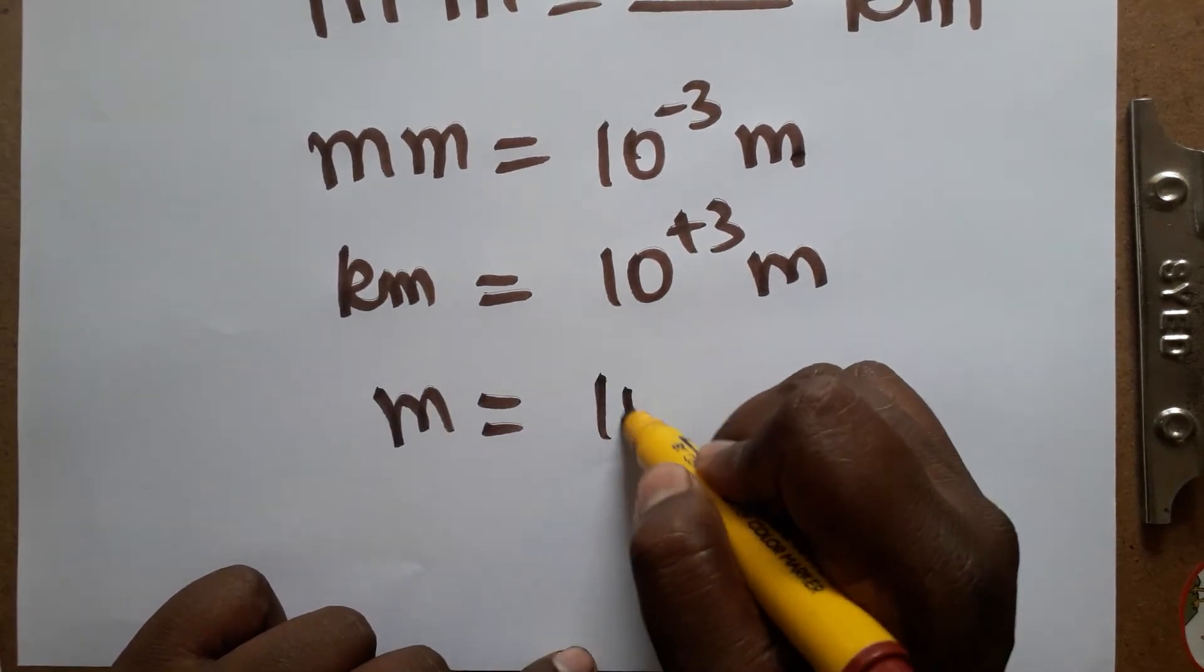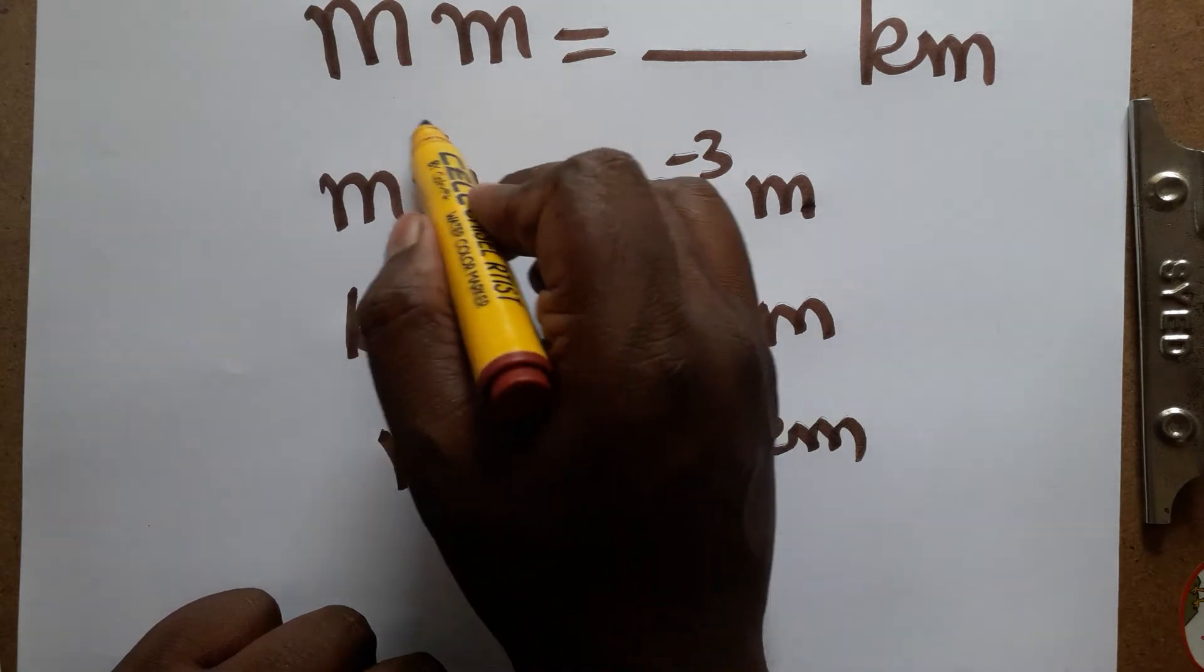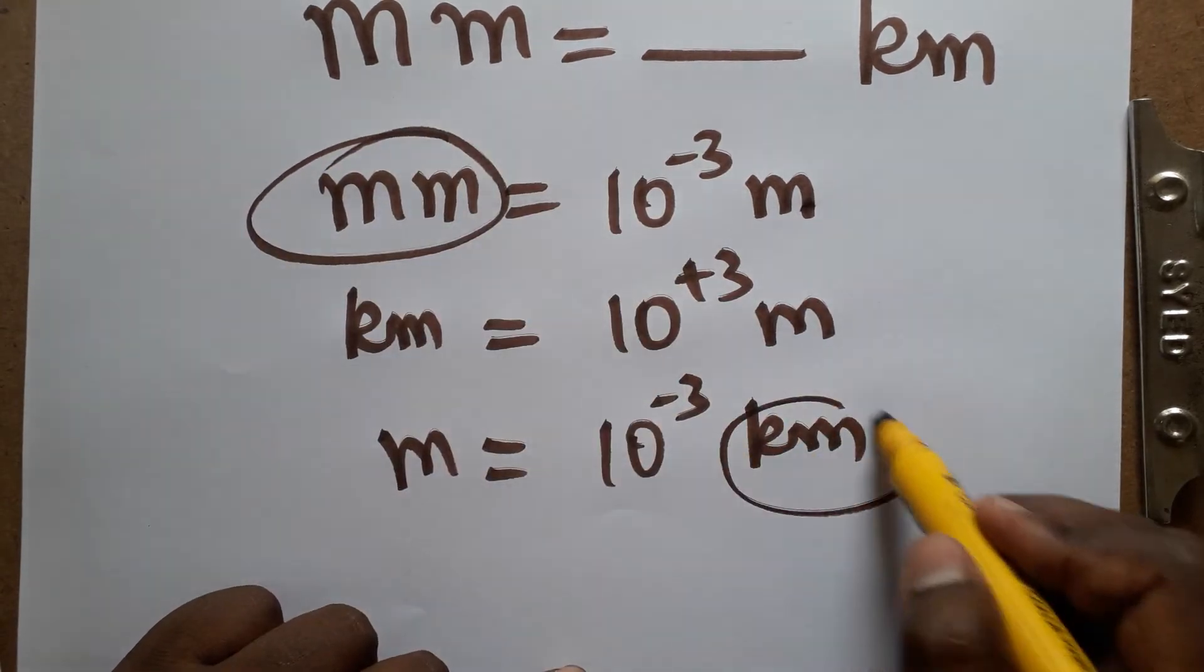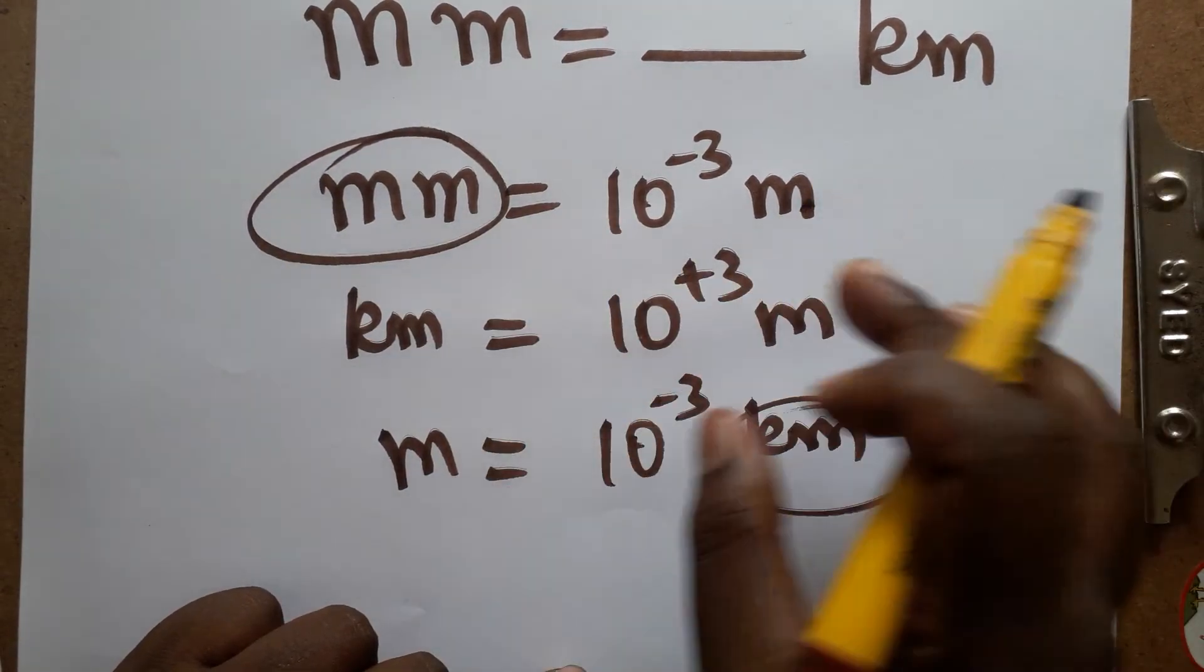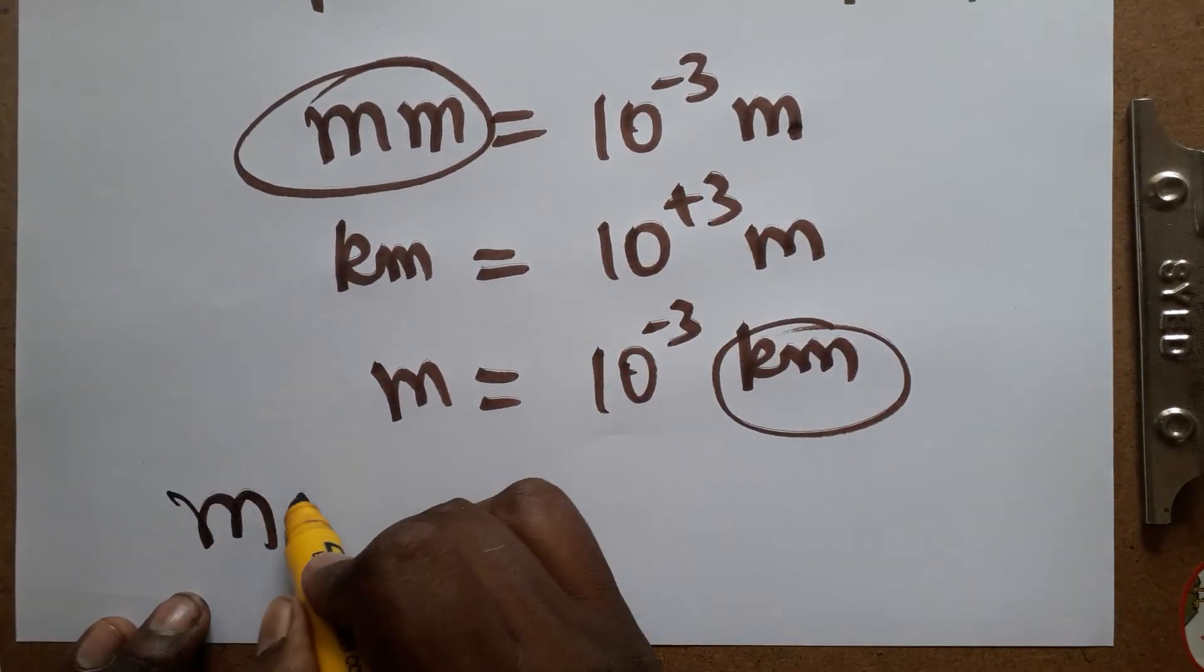Now if I want meter to kilometer, so meter to kilometer is 10 power minus 3 kilometers. So now our unit conversion from millimeter to kilometer. I'll relate both with the meter first. Millimeter to meter is 10 power minus 3.